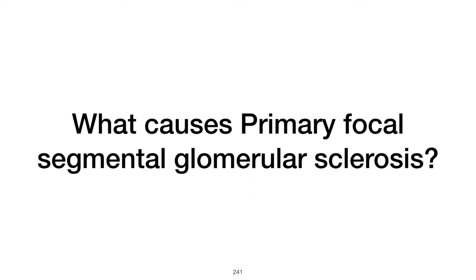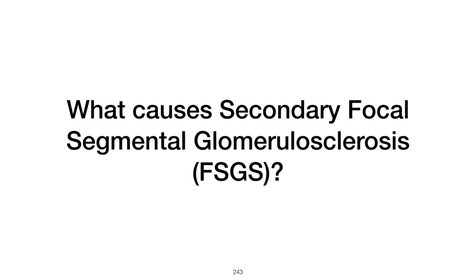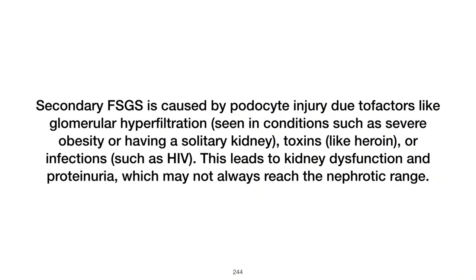What causes primary focal segmental glomerulosclerosis (FSGS)? Primary FSGS is believed to be caused by a circulating factor that leads to podocyte injury, resulting in kidney dysfunction and nephrotic syndrome. Despite its immune-mediated nature, immunofluorescence is typically negative, but steroids may help in treatment. Secondary FSGS results from podocyte injury due to factors like glomerular hyperfiltration (e.g., severe obesity, solitary kidney), toxins (e.g., heroin), or infections (e.g., HIV), causing kidney dysfunction and proteinuria that may or may not reach nephrotic range.